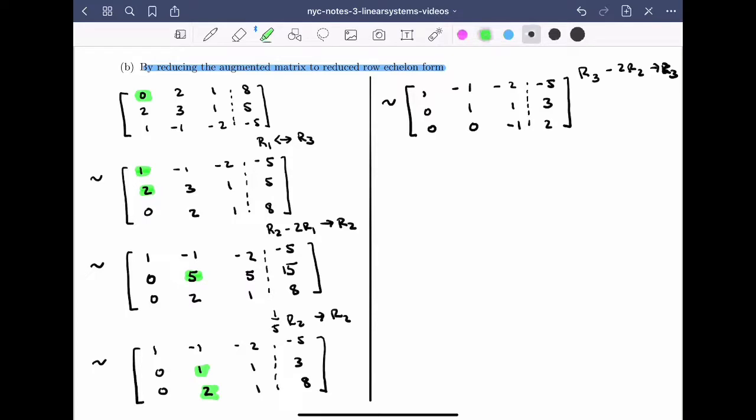Finally, so this matrix at this stage is in row echelon form. Let's check. All rows of zeros are at the bottom, because there are no rows of zeros. The leading entries are 1, 1, and minus 1. They have the correct configuration.